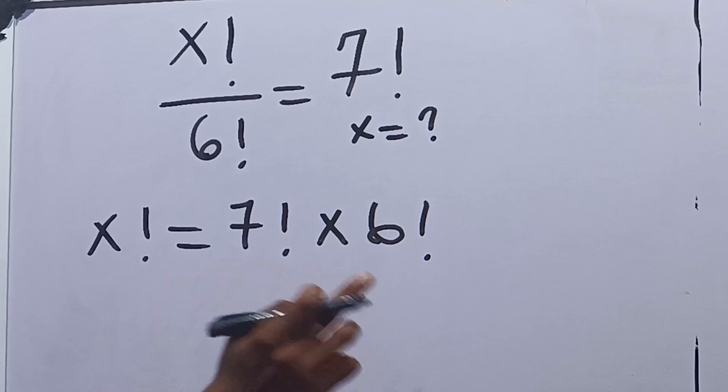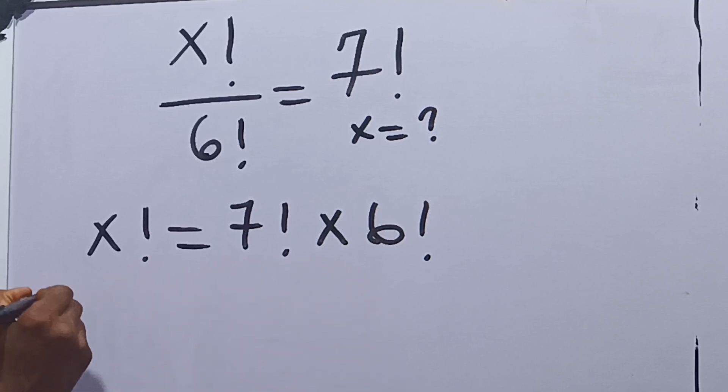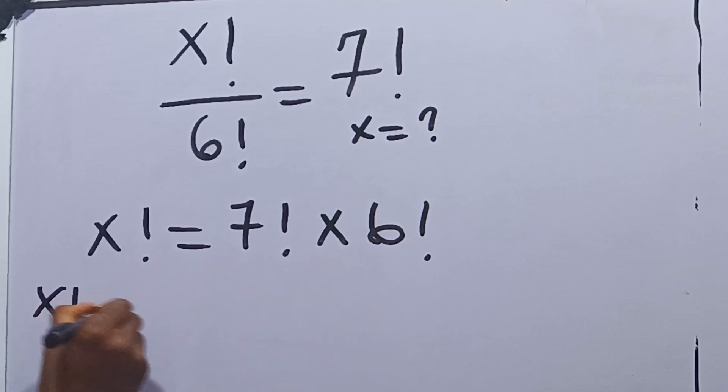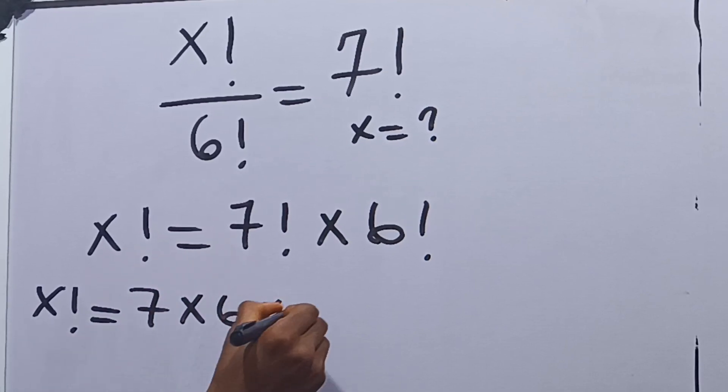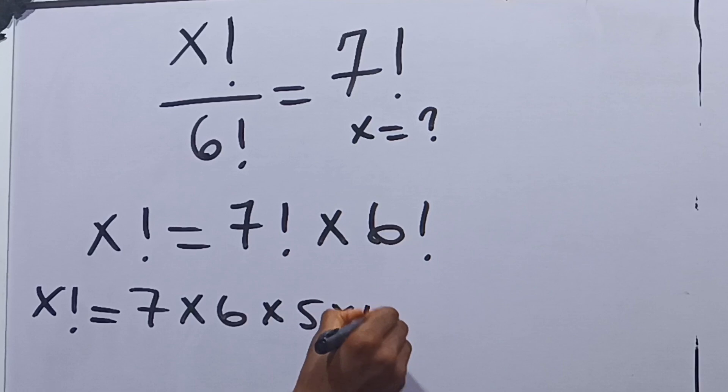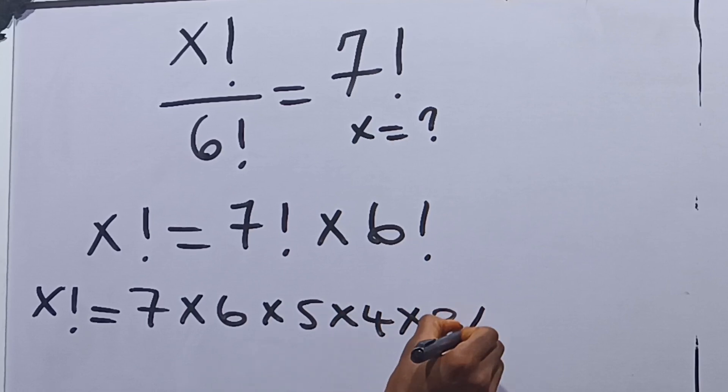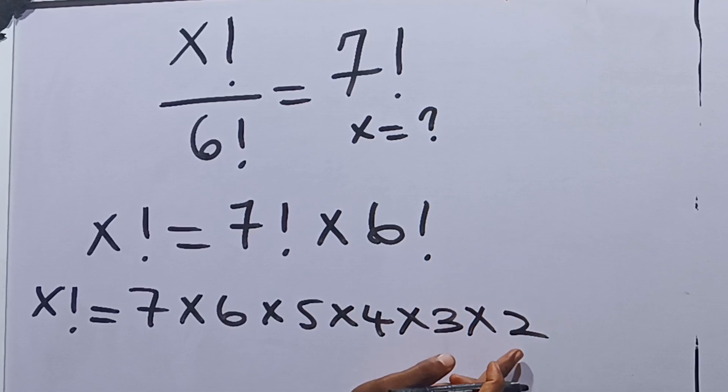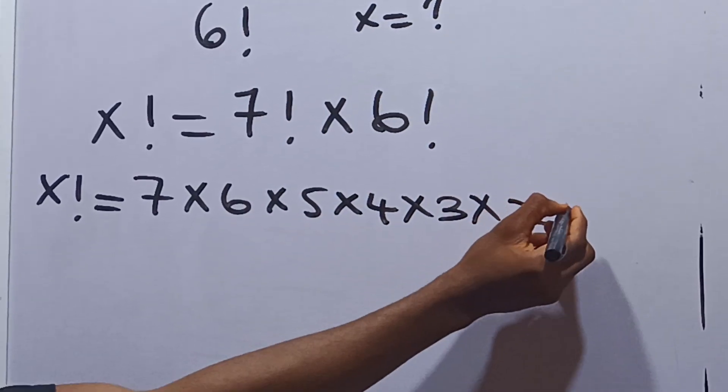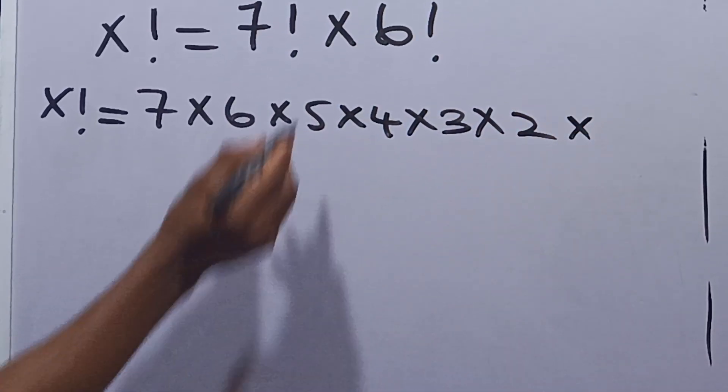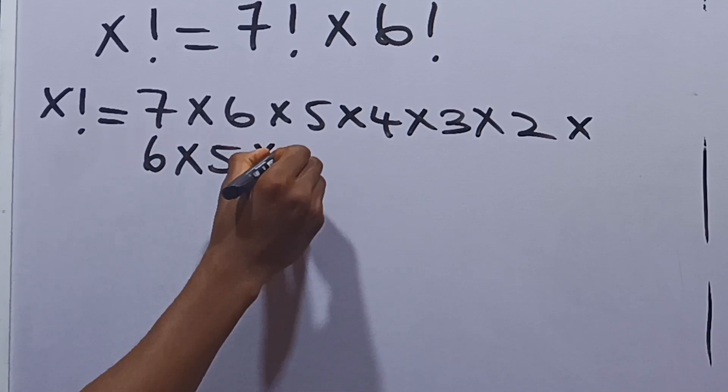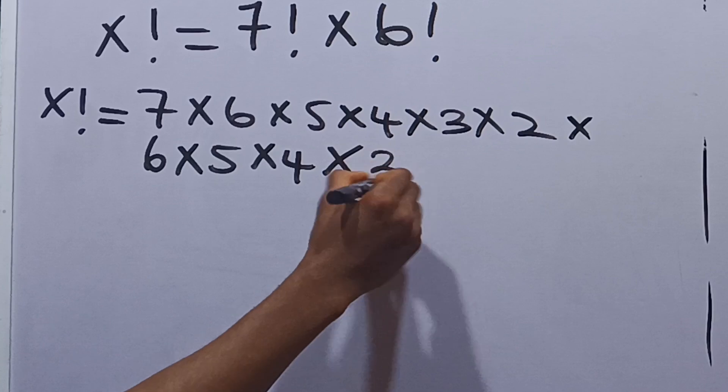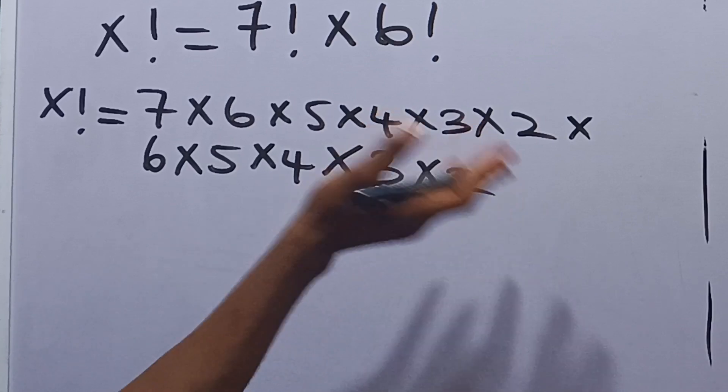From here, we can now say let's open up this and solve this equation. So we have that our x factorial will be equal to 7 factorial, which is 7 times 6 times 5 times 4 times 3 times 2. This is multiplied by 6 factorial, which on the other hand is 6 times 5 times 4 times 3 times 2 times 1.